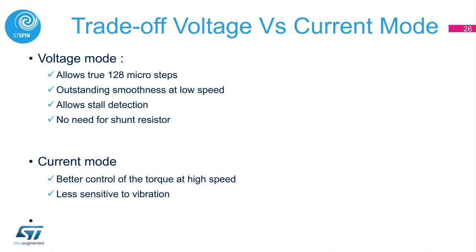Let's see the advantages of voltage mode versus current mode control. In voltage mode, PowerStep01 allows true 128 microsteps, which leads to outstanding smoothness at low speed. It allows sensorless stall detection and there is no need for a shunt resistor. On the other hand, current mode offers better control of torque at high speed and is less sensitive to vibration.